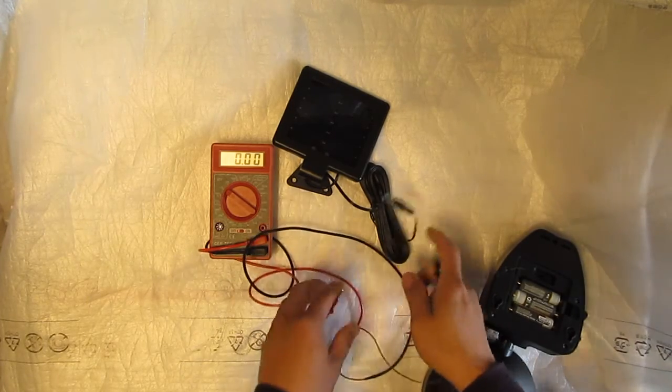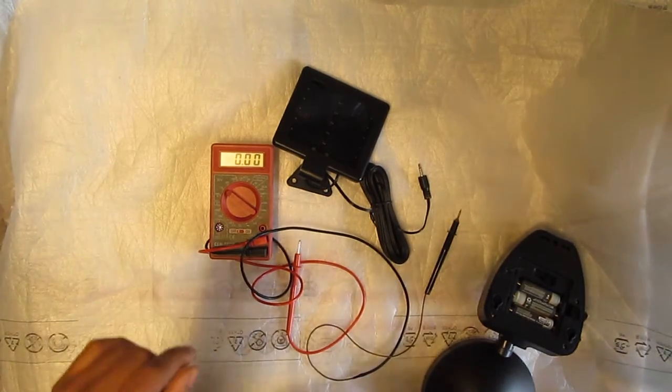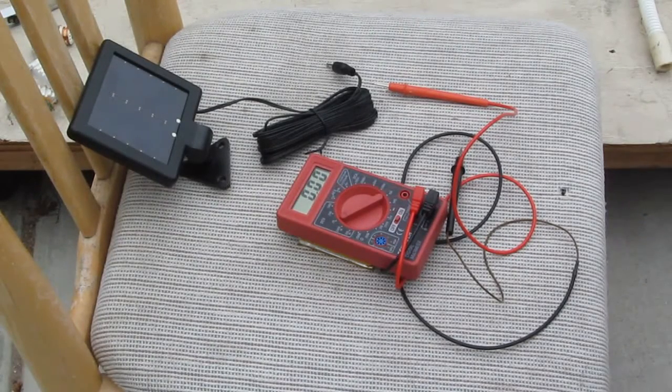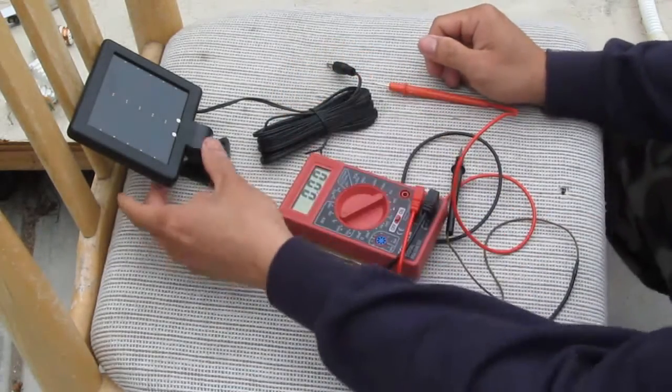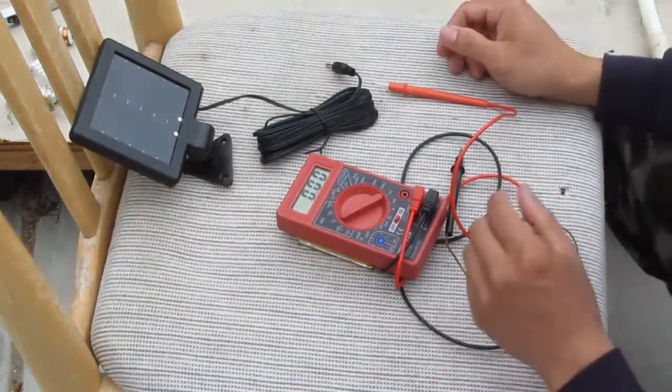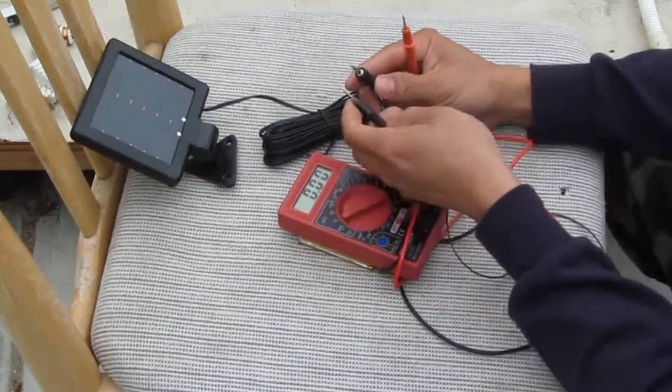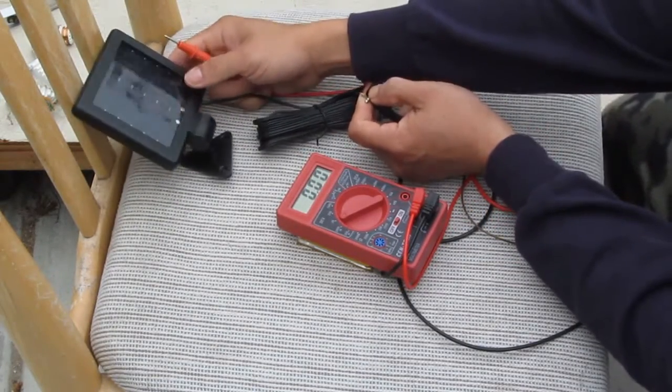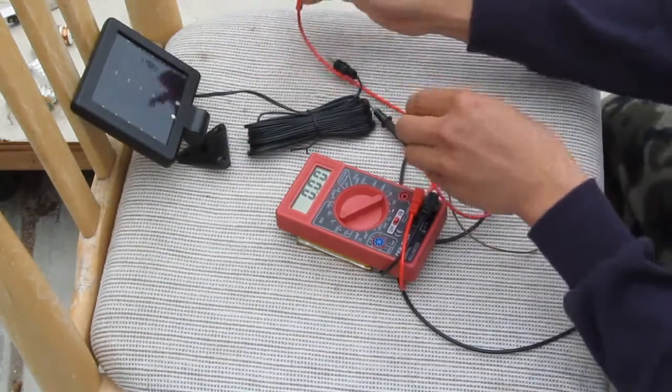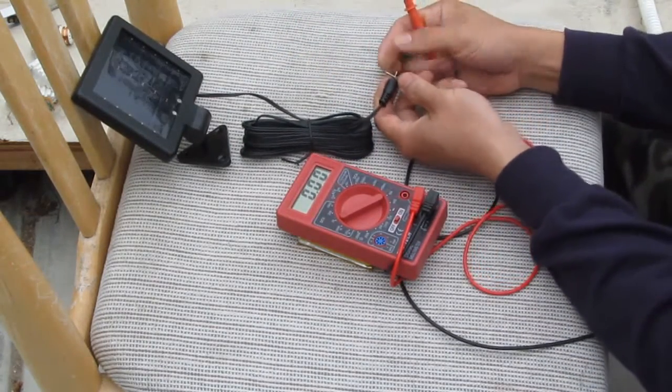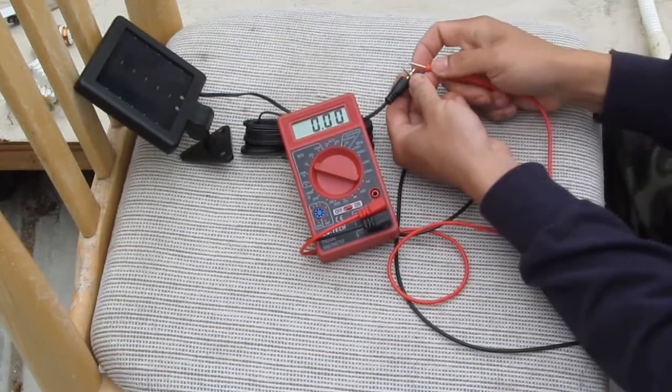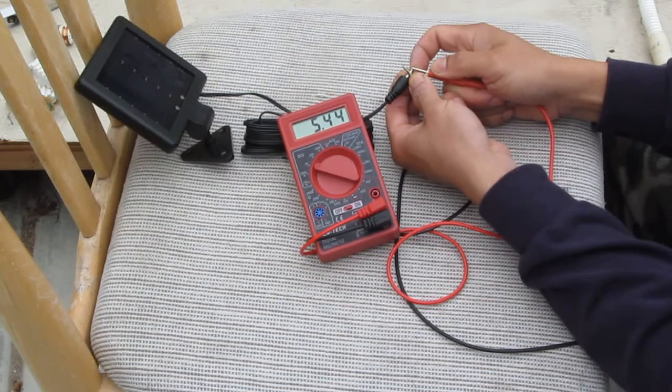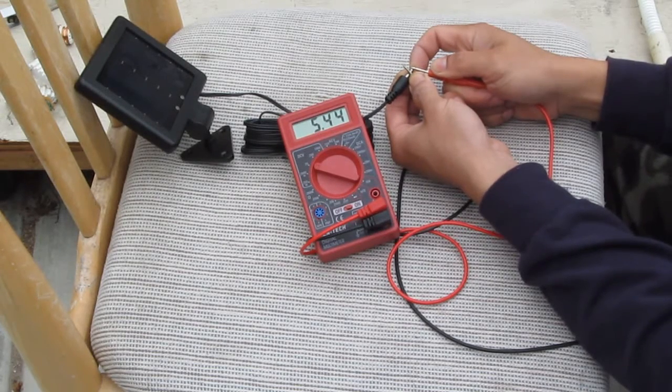We don't have a lot of light here, so let's go outside. Right, so I'm outside right now. There's not a lot of sunlight right now, it's early in the morning, but we can still see it's producing voltage. Yeah, 5.4 volts with not a lot of sun.